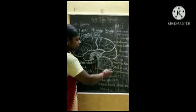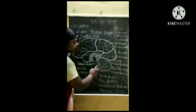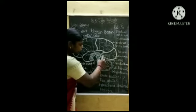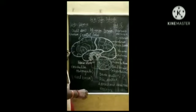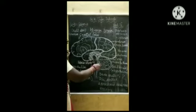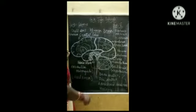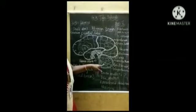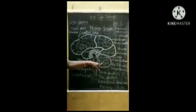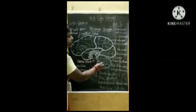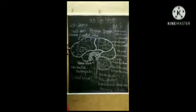Now we are going to see about the midbrain. Can you see here? This is the midbrain — this is the structure of the midbrain. It lies behind the cerebrum. It controls the movements of the muscles and it is responsible for the balancing of the body.